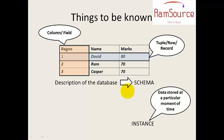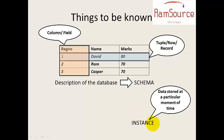Next is instance. An instance refers to what is stored in a particular table at a particular timeline — the data stored at that particular moment of time.